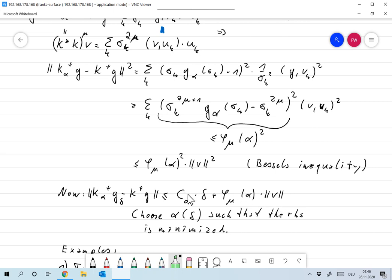Now we have an estimate that's somehow based on α. And of course, what we would like to do is we would like to choose a parameter selection function α such that the right-hand side is minimized. Because keep in mind, we're still open with α, we can still define α as we want, provided α goes to zero for δ going to zero. So we would like to choose this in an optimal way, and we'll do that for some examples in the next video.